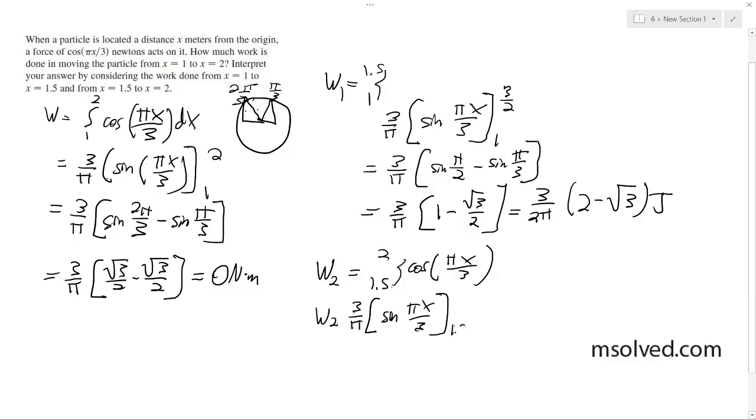from 1.5 to 2. And we get 3 over pi sine of 2 pi over 3 minus sine of pi over 2, and we get 3 over pi times square root of 3 over 2 minus 1. And work 2 ends up being 3 square root of 3 minus 2 over 2 pi.